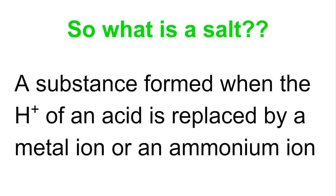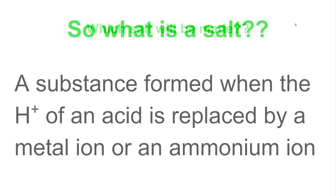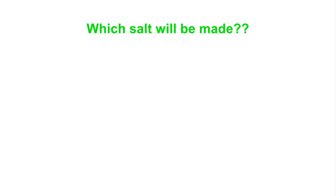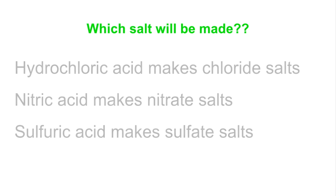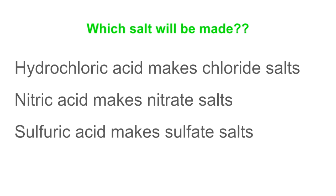We've talked a lot about salts — so what is a salt? A salt is defined as a substance formed when the H⁺ ion of an acid is replaced by a metal ion or an ammonium ion. To finish: which salt will you make? If you use hydrochloric acid you make a chloride salt; if you use nitric acid you make a nitrate salt; and if you use sulfuric acid you make sulfate salts.